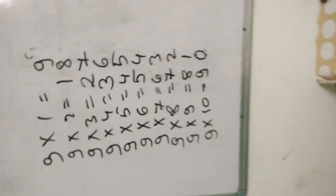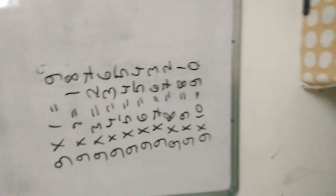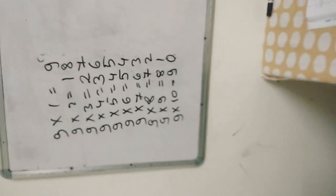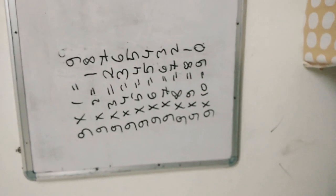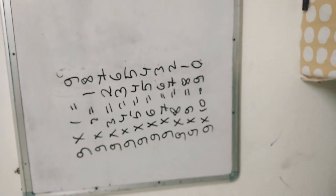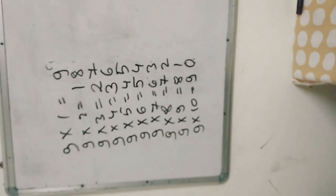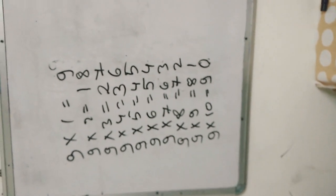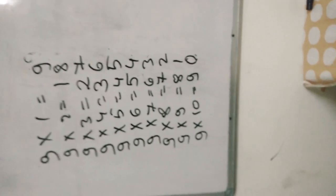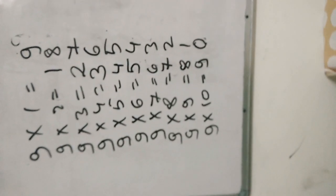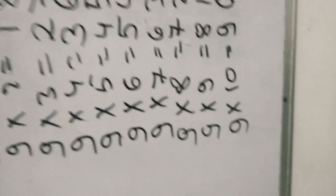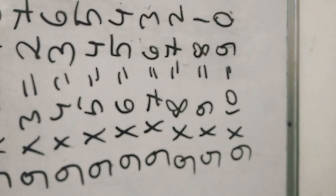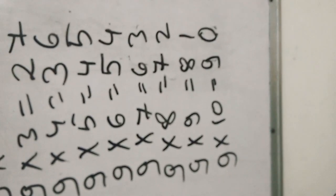Have you understood? Start reading the table of nine: nine ones are nine, nine twos are eighteen, nine threes are twenty-seven, nine fours are thirty-six, nine fives are forty-five, nine sixes are fifty-four, nine sevens are sixty-three, nine eights are seventy-two, nine nines are eighty-one, nine tens are ninety.